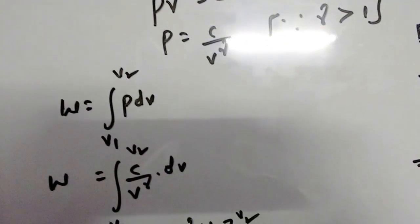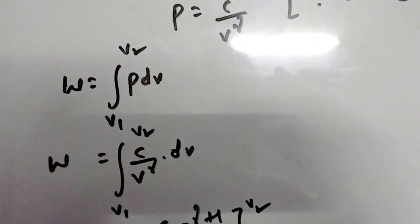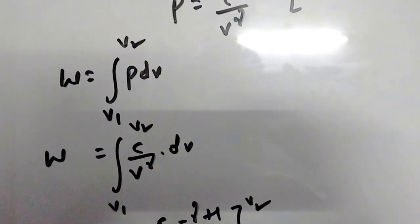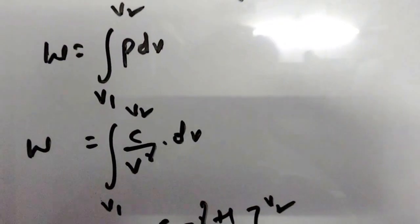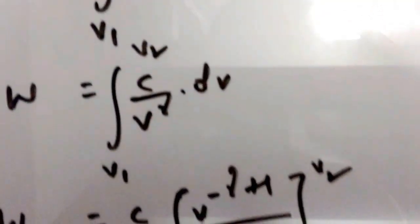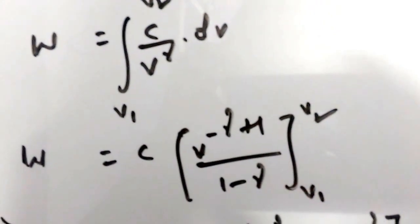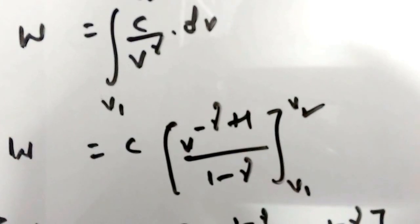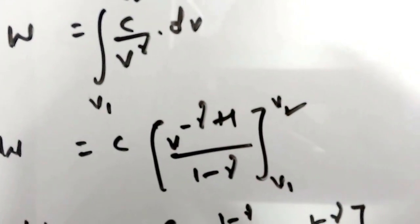From the equation of non-flow work, W = integral of P dV within the limits V1 to V2, and substituting P = C / V^γ, we take C as constant and integrate 1 / V^γ to get C × V^(−γ+1) / (1 − γ), evaluated within the limits V1 to V2.